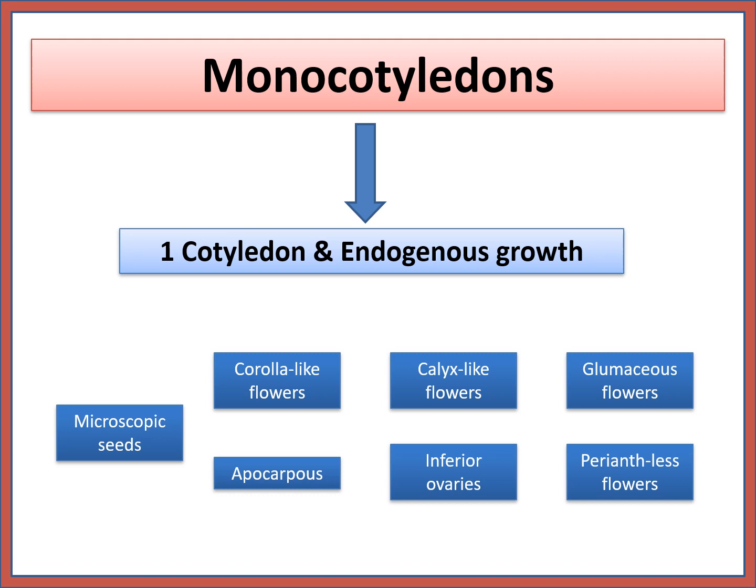Monocotyledon means one cotyledon and endogenous growth. These are the characters: macroscopic seeds, corona-like flower, apocarpous, calyx-like flower, inferior ovary, glumaceous flower, and perianthalous flower.